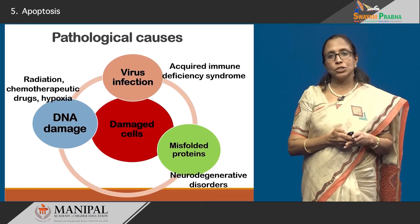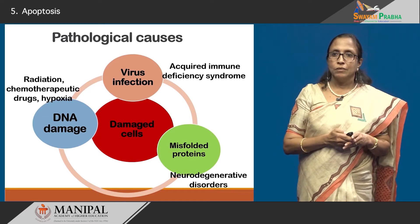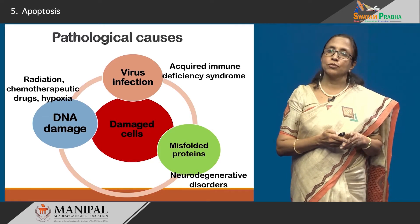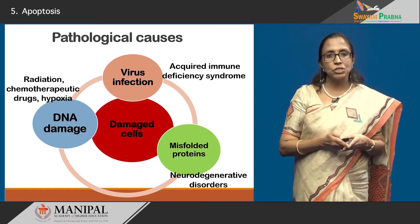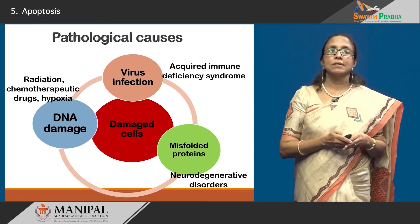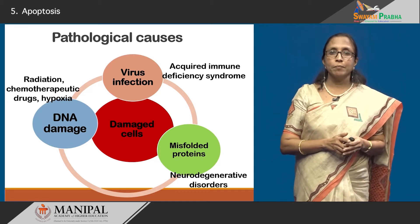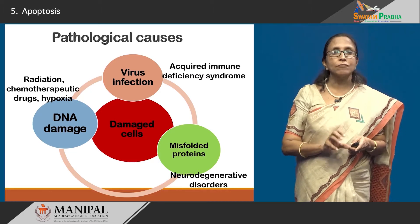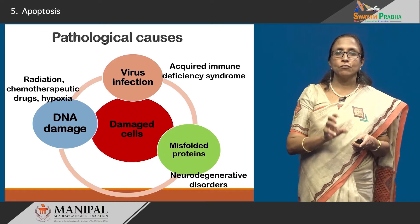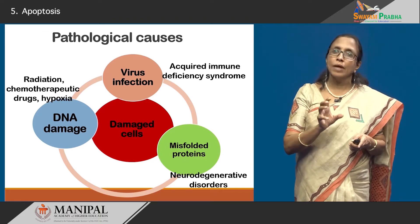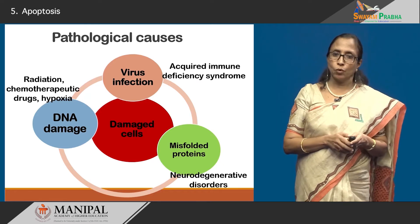Looking at pathological causes — when cells are damaged due to DNA damage, as would occur in radiation, chemotherapeutic agents, hypoxia, or formation of free radicals, those damaged cells have to be removed, and that is a specific cause for apoptosis. In that process, p53 is very much involved.